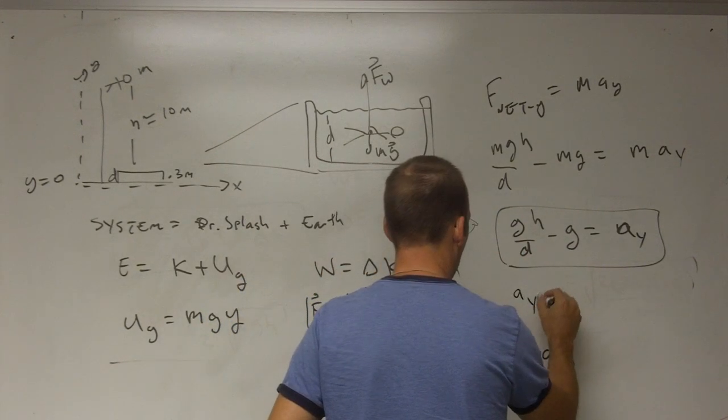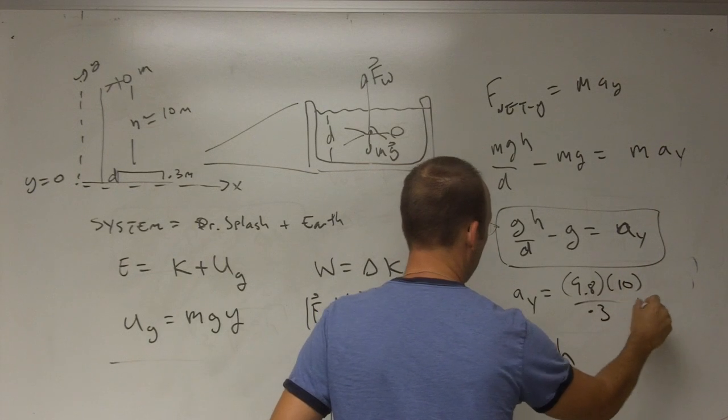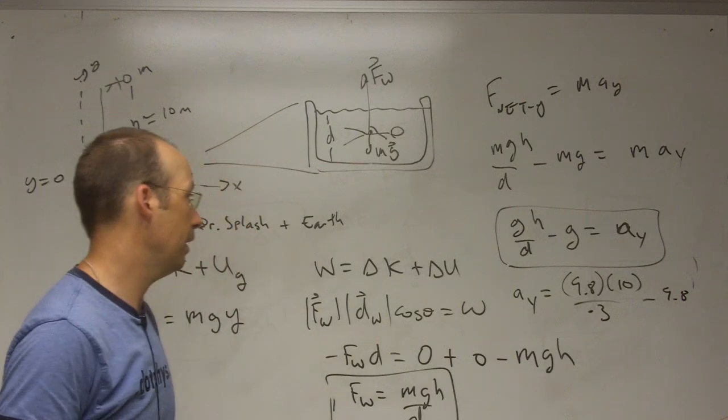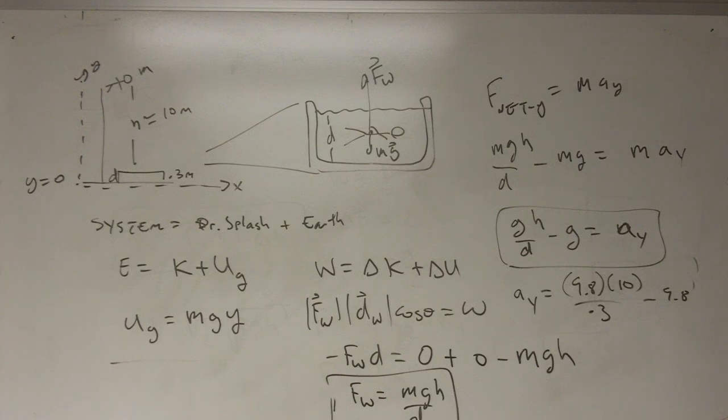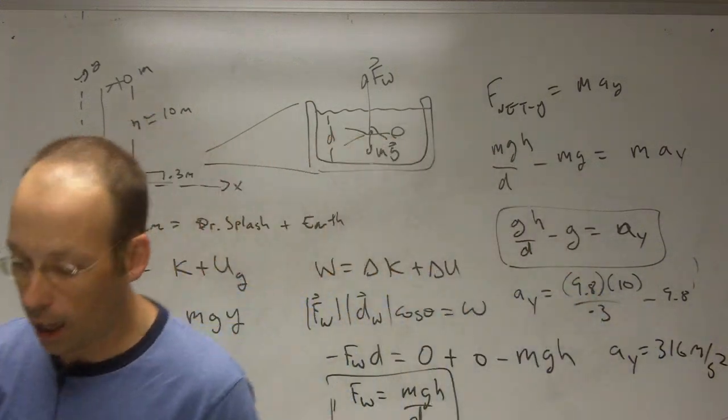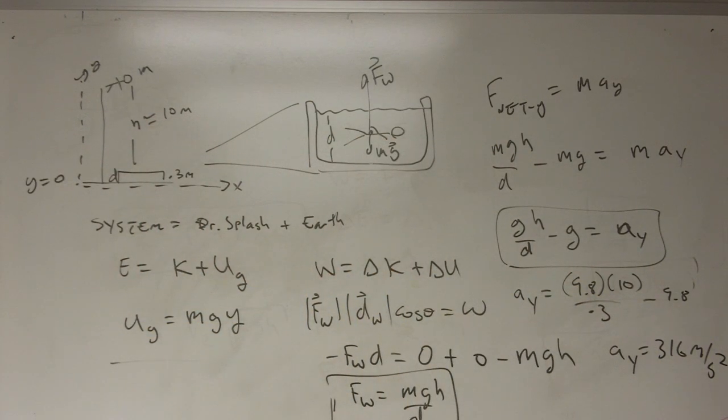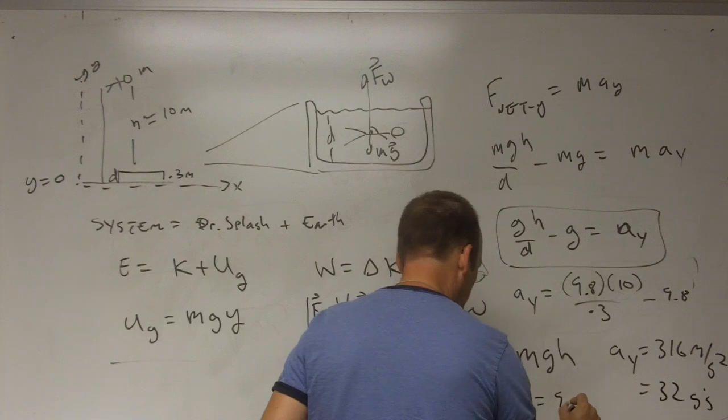AY is going to be G 9.8. I'll leave off the units. H I said was 10. D was 0.3 minus 9.8. Okay. So it's 98 over 0.3. I don't want to make a mistake. Let me just do it on the calculator real quick. Otherwise I'd feel foolish. So I get 316 meters per second squared.